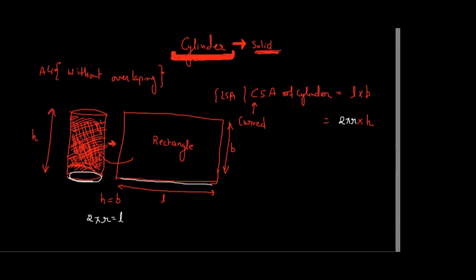What is the final formula for my CSA of cylinder? 2πrh. How did you find it, easy or difficult? Yes, enough. So curved surface area of cylinder is 2πrh. Making sense? Yeah.